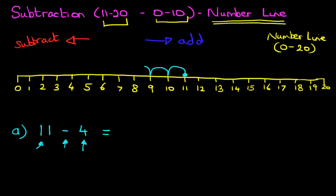1, 2, 3, and 4. One jump, two jumps, three jumps, and four jumps. So what number have we landed on? We have landed on number 7, and that is the answer. 11 minus 4 equals 7. It really is as simple as that.